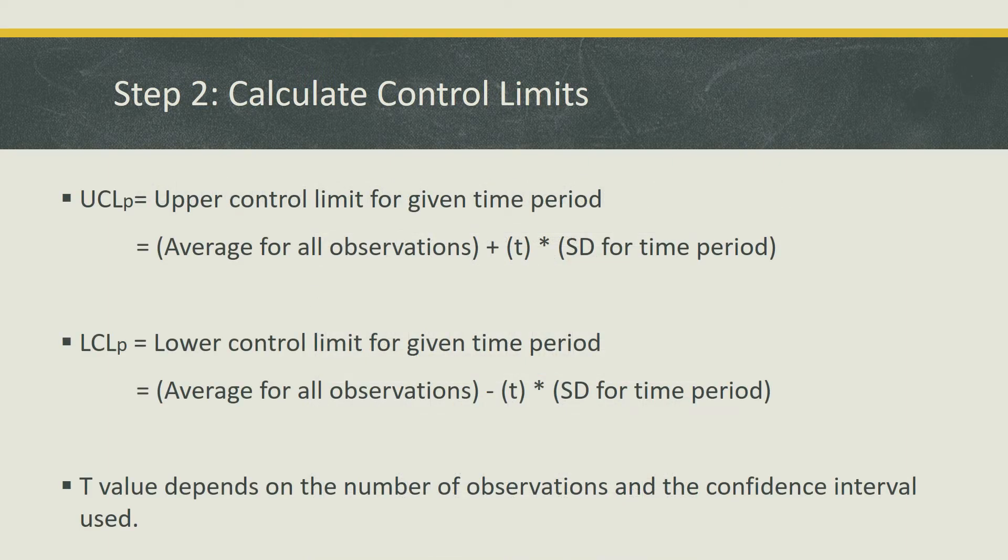We should finally be able to calculate the control limits, but before we go any further, I want to briefly explain what the upper control limit and the lower control limit reflect. So the upper control limit for a given time period is essentially the average for all observations plus T times the standard deviation for that given time period. The T value depends on the number of observations and the confidence interval used. Depending on the confidence interval, we can expect that either 95 or 99% of values fall between the upper control limit and the lower control limit. Now for the lower control limit for a given time period, it's the average for all observations, but instead of adding T times the standard deviation for that time period, we'll be subtracting it.